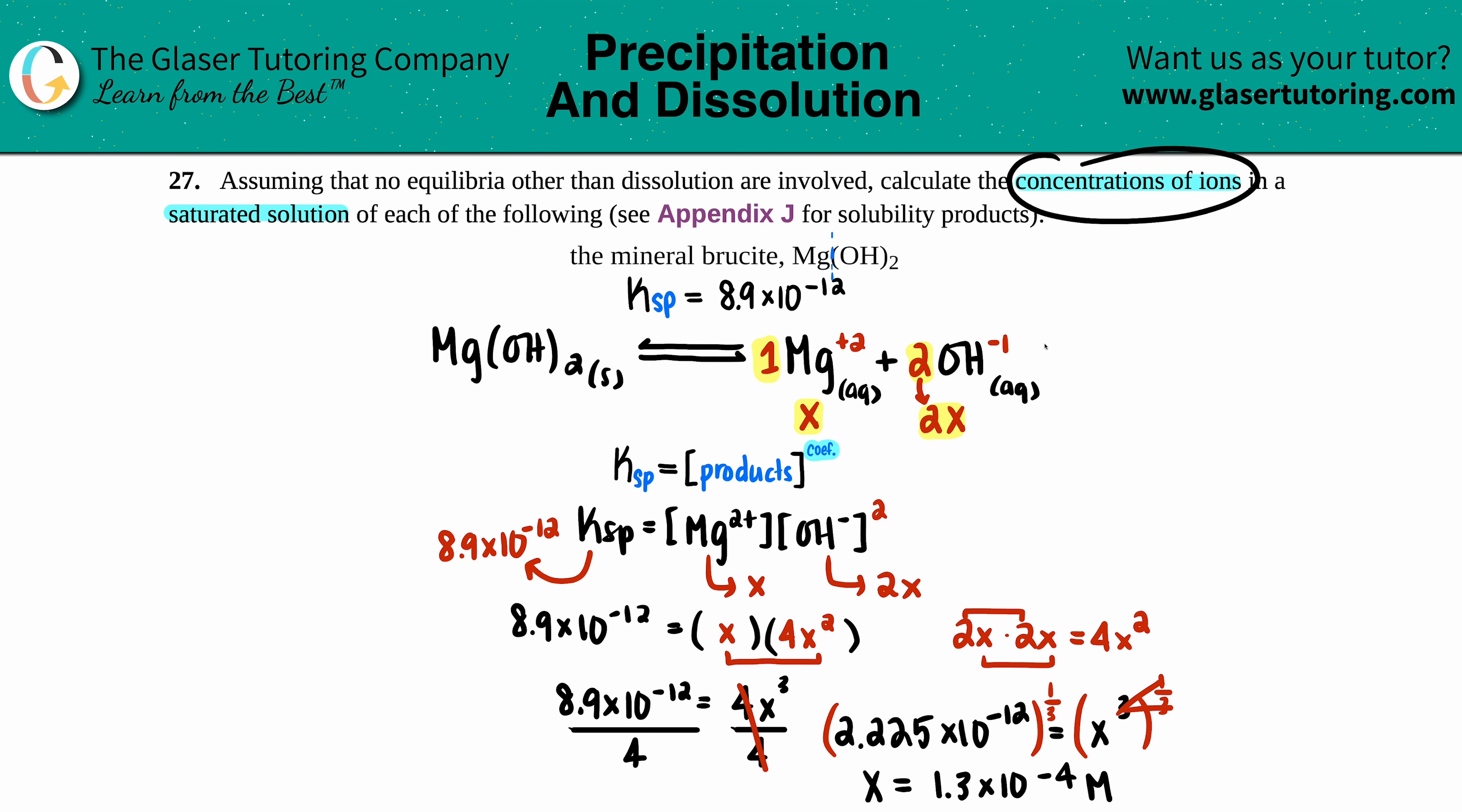They just want the concentration of the ions, so you have to go back and see what we labeled each ion. For magnesium, it was just x, so x was 1.3 times 10 to the negative 4th. That's what this concentration is: 1.3 times 10 to the negative 4th molarity.